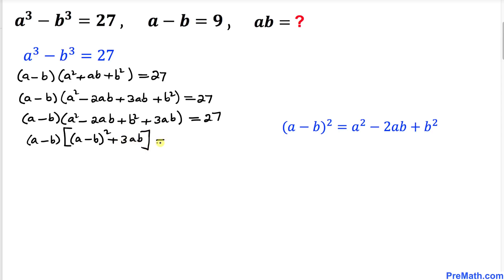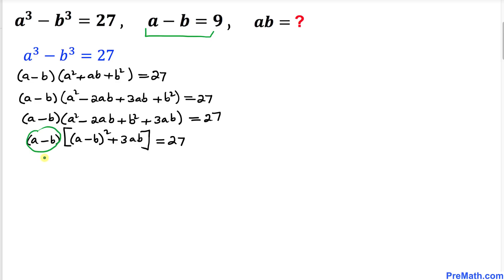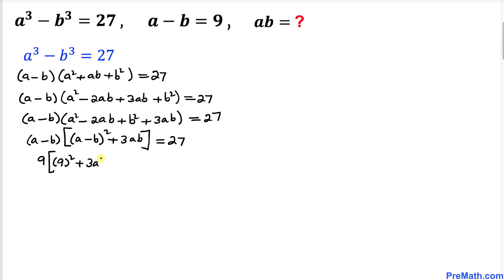From our second equation, a minus b equals 9. So wherever we see a minus b, I replace it with 9. This gives us 9 times 9 squared plus 3 times ab equals 27.